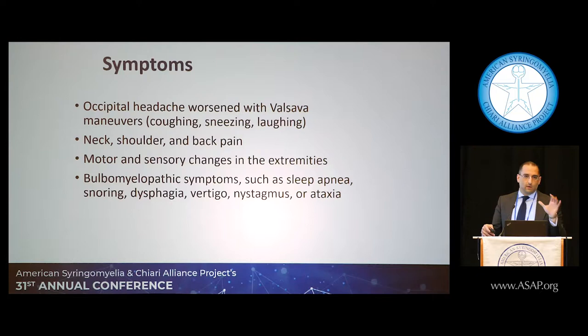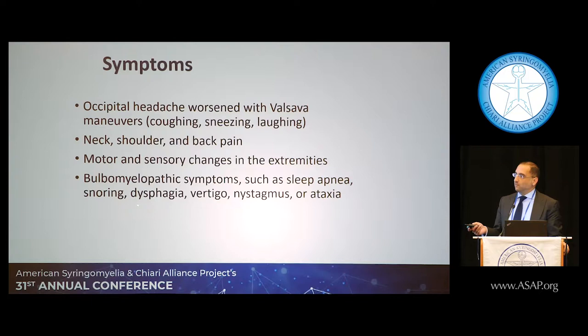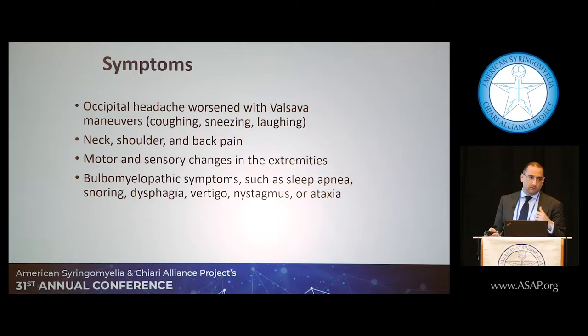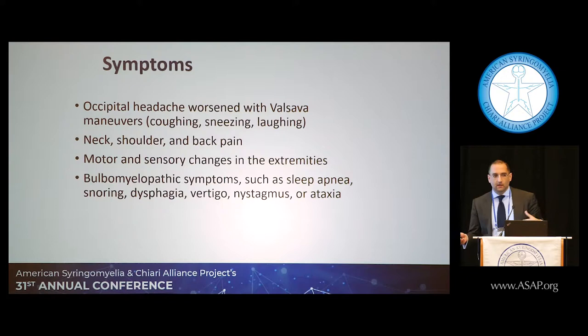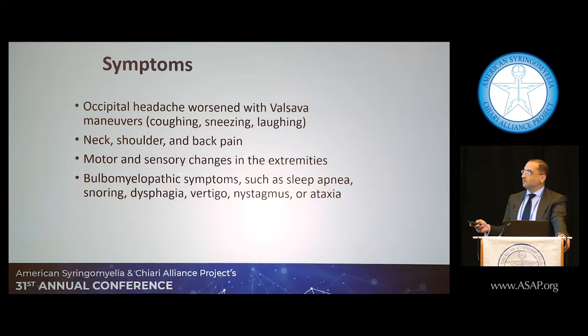There are motor and sensory changes, and what's called bulbar myelopathy — meaning problems with the brain stem and spinal cord. The more advanced symptoms you have to specifically ask about are sleep apnea, snoring, dysphagia (difficulty swallowing), vertigo (room spinning), nystagmus (abnormal bouncing of the eyes), and ataxia (being off balance). These symptoms point to the lower brain stem or upper spinal cord.